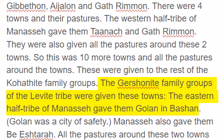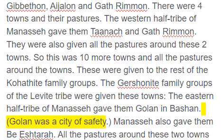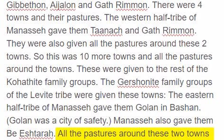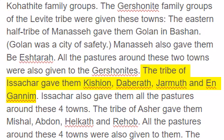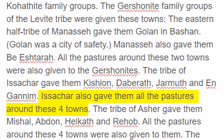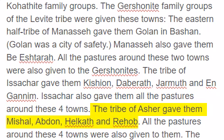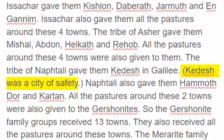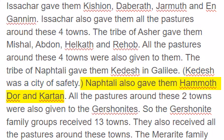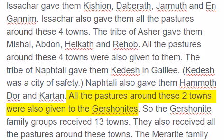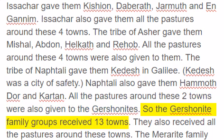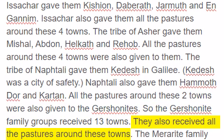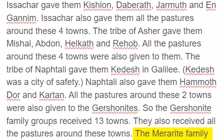The Gershonite family groups of the Levite tribe were given these towns. The eastern half-tribe of Manasseh gave them Golan in Bashan. Golan was a city of safety. Manasseh also gave them Beeshtara, and all the pastures around these two towns. The tribe of Issachar gave them Kishan, Dabarath, Jarmuth and Anganim, and all the pastures around these four towns. The tribe of Ashur gave them Mishal, Abdan, Helkoth and Rehob, and all the pastures around these four towns. The tribe of Naphtali gave them Kadesh in Galilee. Kadesh was a city of safety. Naphtali also gave them Hamathdor and Kartan, and all the pastures around these towns. So the Gershonite family groups received thirteen towns and all the pastures around these towns.